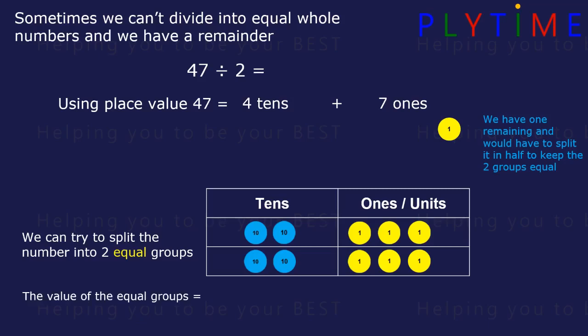The value of the two equal groups is two tens and three ones, which is the same as 20 plus 3, or 23. And we have a remainder of 1 that we couldn't split. So the answer is 23, remainder 1.